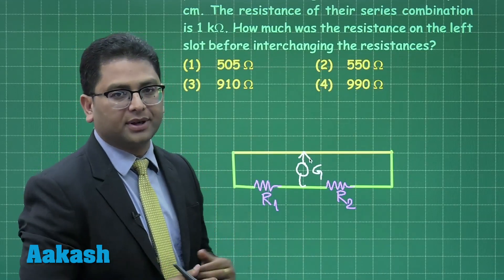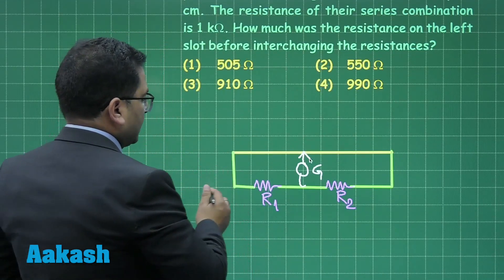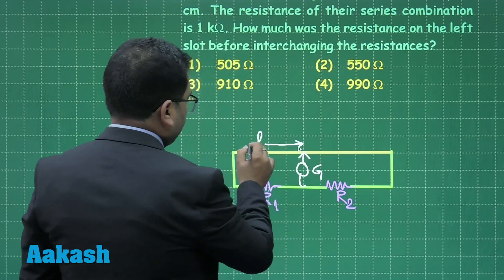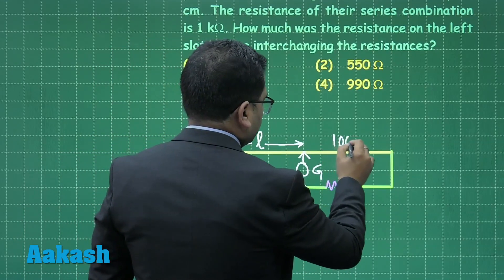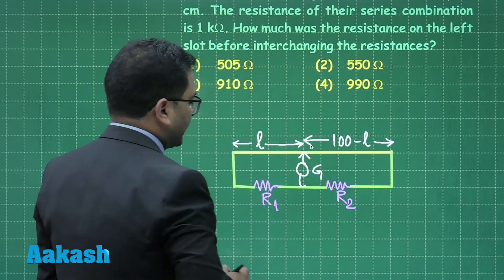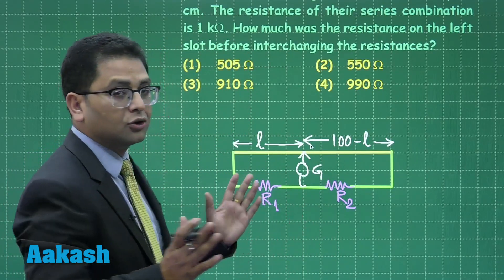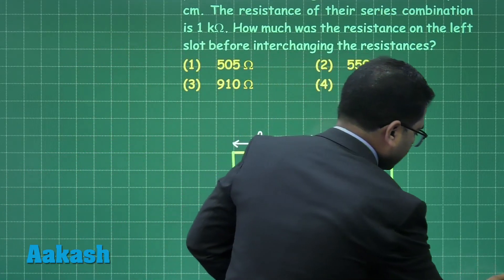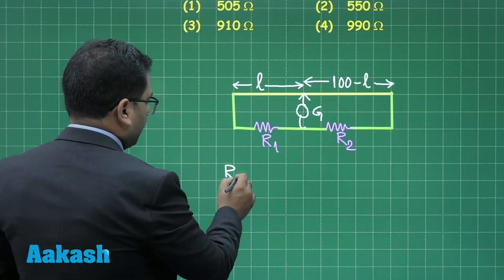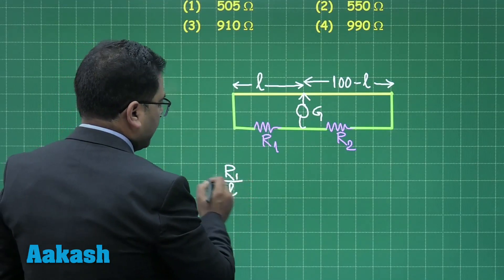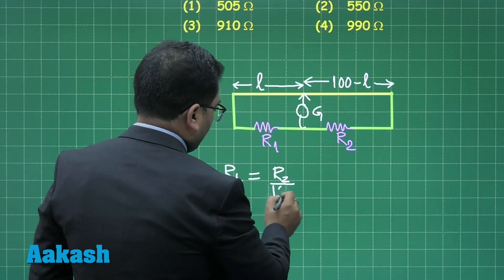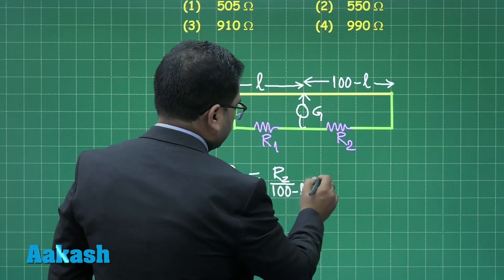Initially, if l is the balance length, then the remaining length is 100 minus l. From the first condition: R1 divided by l equals R2 divided by (100 minus l). That is the first equation.